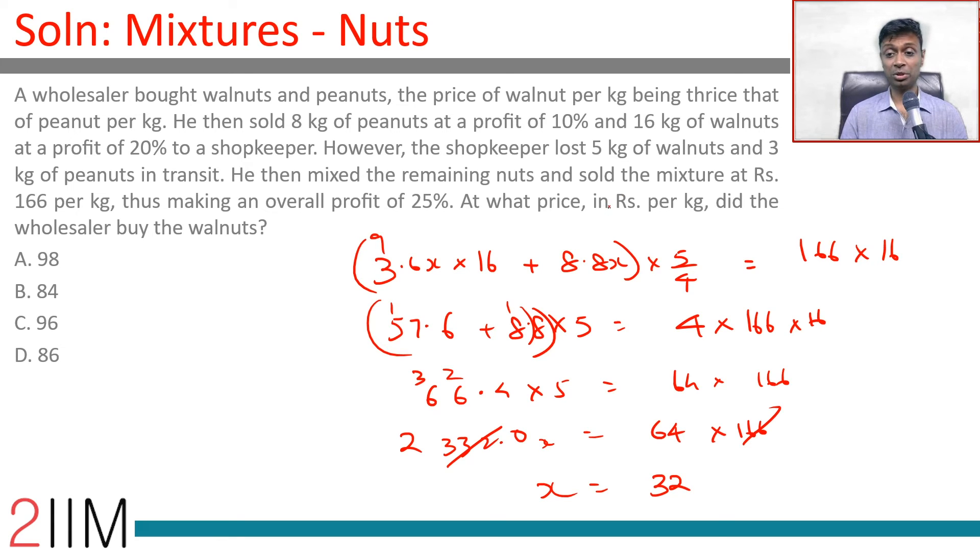At what price in rupees per kilogram did the wholesaler buy the walnuts? Price of walnuts is 3x, x is 32, 3x is 96.